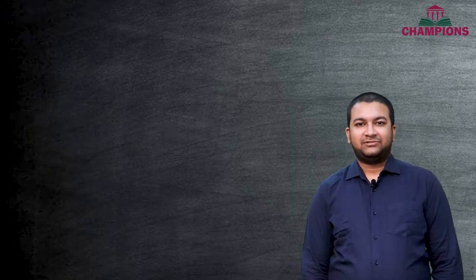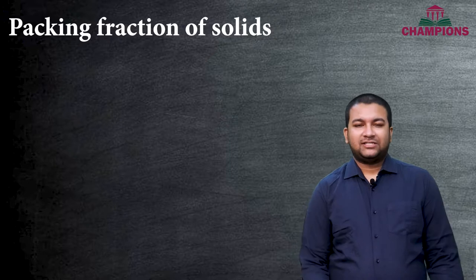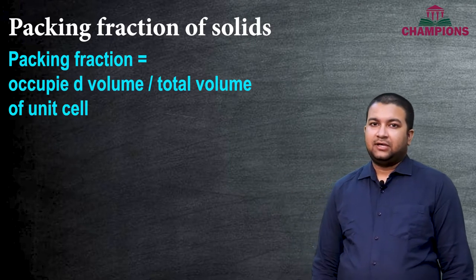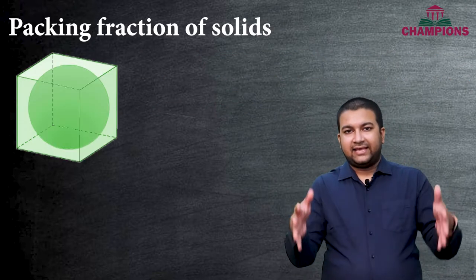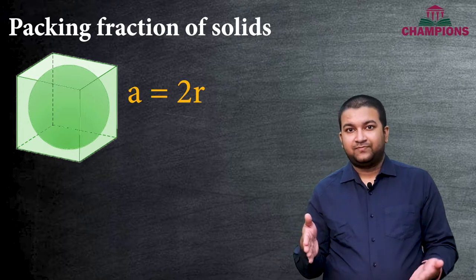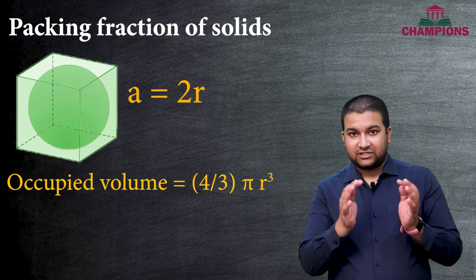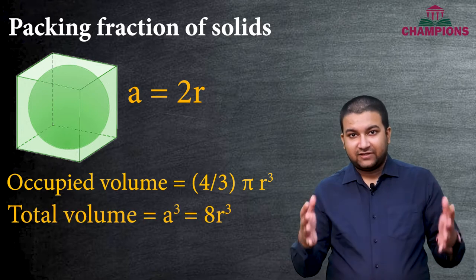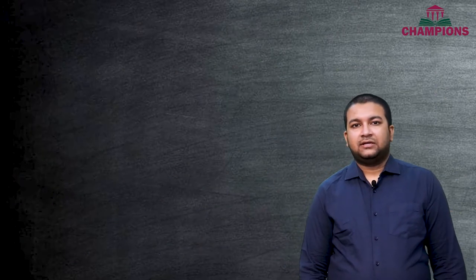Hello champions, I am Chandan Biswas and in this video we are going to learn about packing fraction of solids. Packing fraction is defined with a simple formula: the occupied volume upon total volume of the unit cell. For example, if you are packing a cube with a sphere, with the diameter of the sphere equal to the side of the cube, a lot of empty space will still be left over. We take the occupied volume — the volume of the sphere — divided by the volume of the cube, and that ratio is the packing fraction.